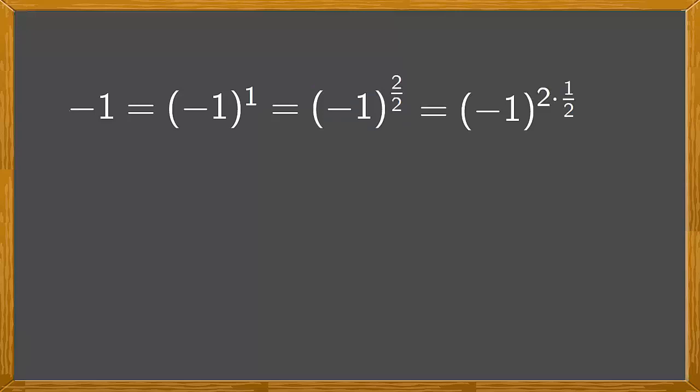Next we'll apply the properties of powers. We have minus 1 raised to the 2 and then everything raised to the power of a half. This follows because when we have the power of a power the exponents are multiplied.